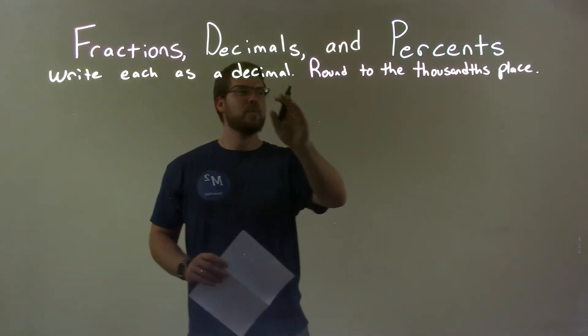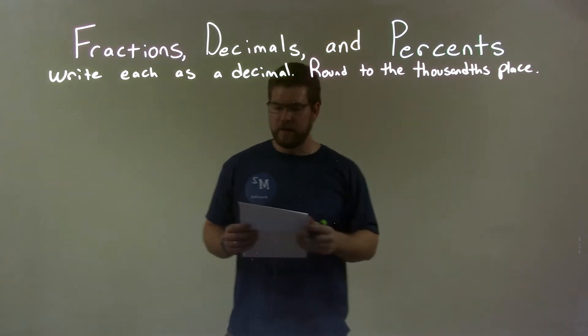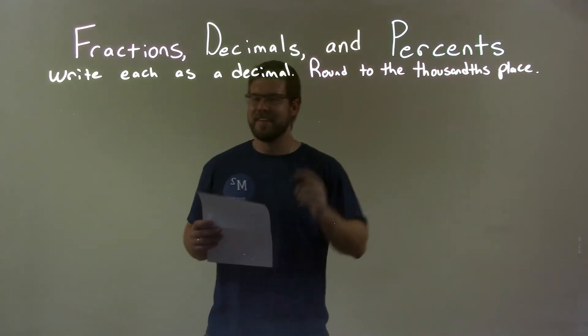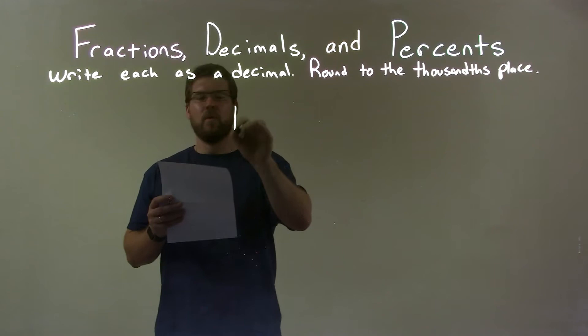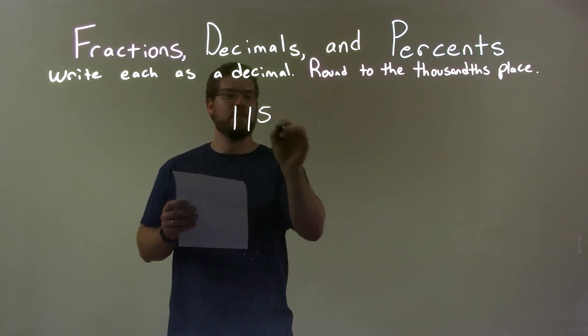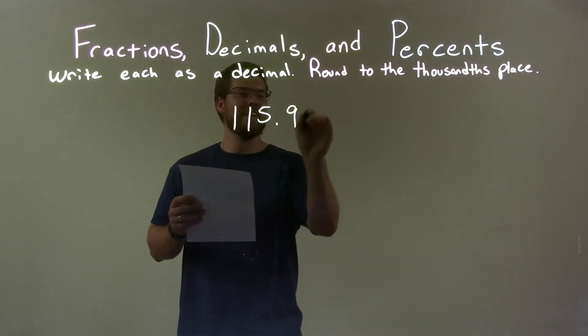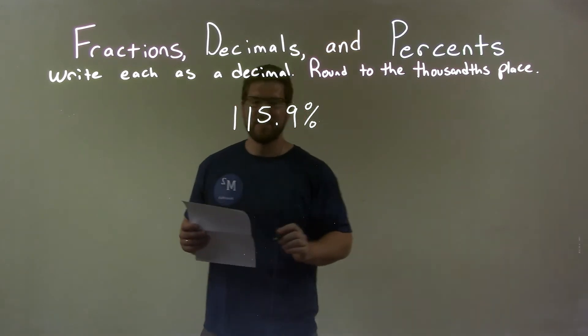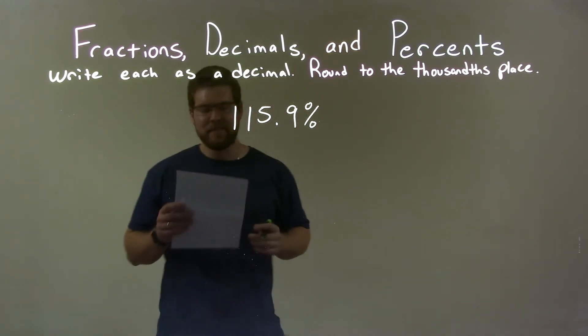I'm going to write each as a decimal and round to the thousandths place. So, if I was given this percent, 115.9%. Okay, the five is going to throw me off, but it's okay.